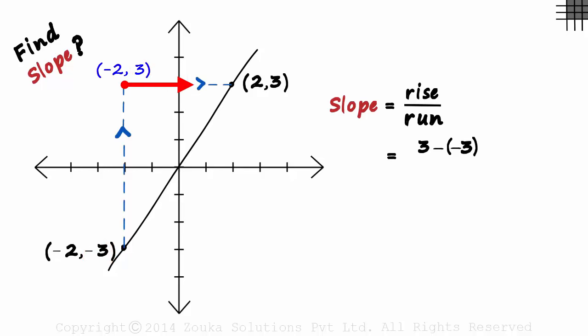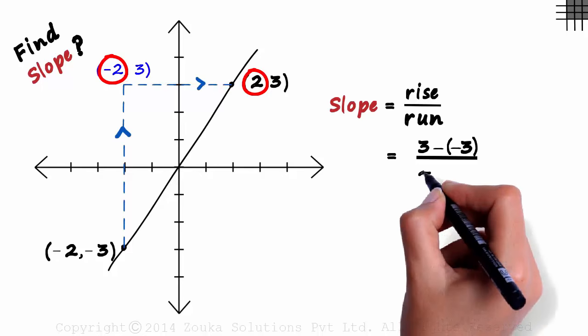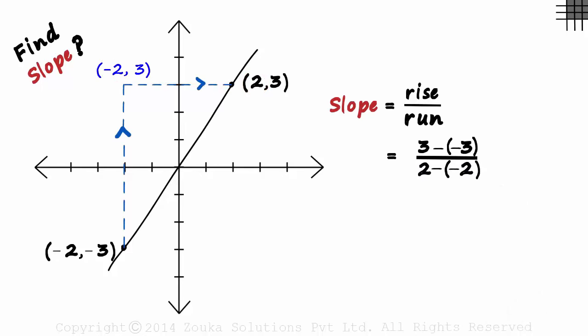The run will be this length which is the difference in the x coordinates of these two points. 2 minus minus 2. The slope is 6 over 4 which is 3 over 2. The rise as well as the run are positive. Up and right.